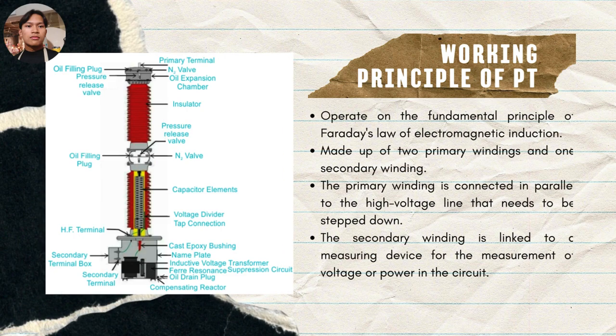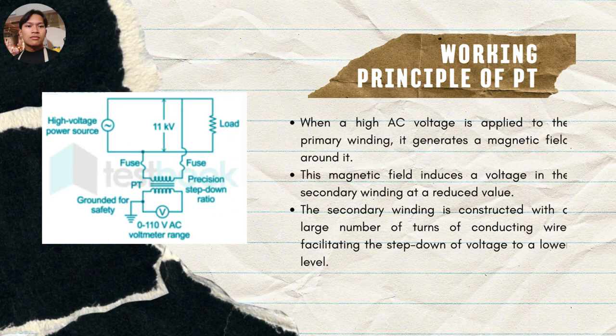The potential transformer operates on the fundamental principle of Faraday's Law of Electromagnetic Induction. It is made up of two primary windings and one secondary winding, as shown in the figure. The primary winding is connected in parallel to the high voltage line that needs to be stepped down, while the secondary winding is linked to a measuring device. When a high AC voltage is applied to the primary winding, it generates a magnetic field which induces a voltage in the secondary winding at a reduced value. Because the secondary winding is constructed with a large number of turns, this facilitates the step-down of voltage to a lower level.